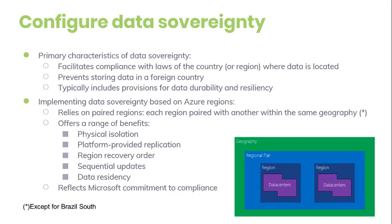The principle of Azure region pairing: Azure operates in multiple geographies around the world. An Azure geography is a defined area of the world that contains at least one Azure region. An Azure region is an area within a geography containing one or more data centers. Each Azure region is paired with another region within the same geography, forming a regional pair, with the exception of one region outside its geography. Azure serialized platform updates ensure that only one region in a pair is updated at a time. In the event of an outage affecting multiple regions, one region in each pair will be prioritized for recovery.